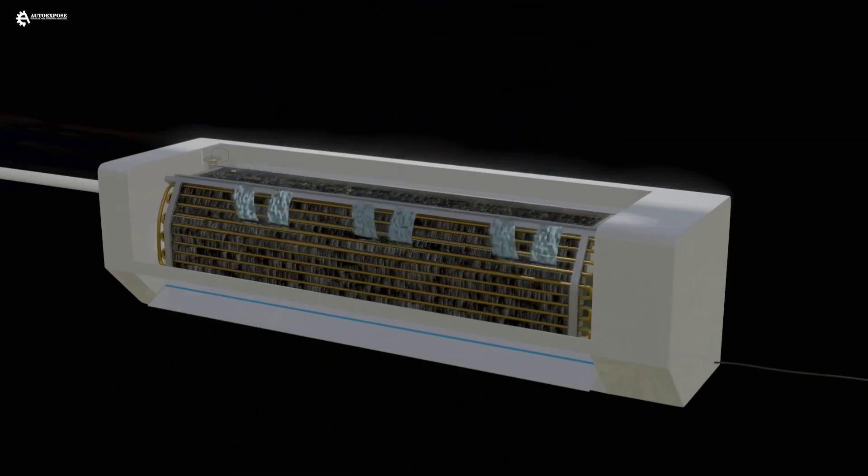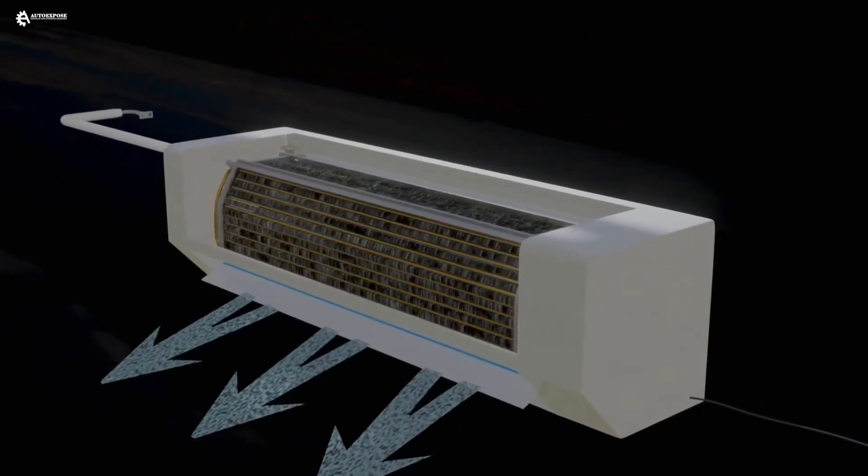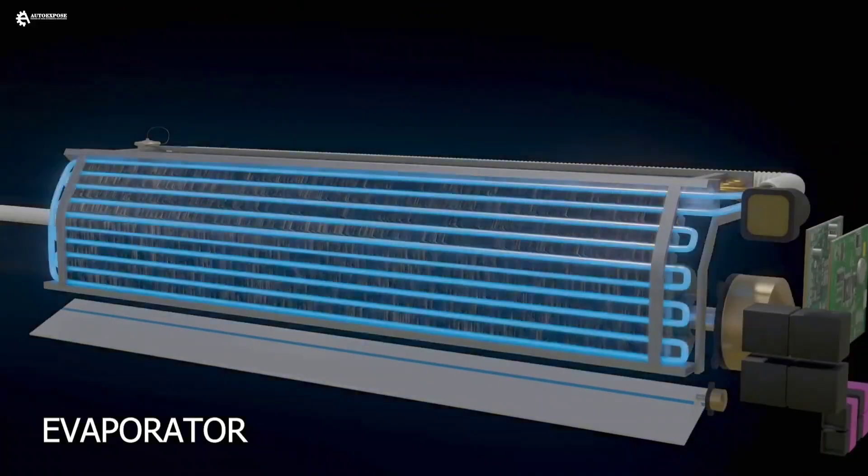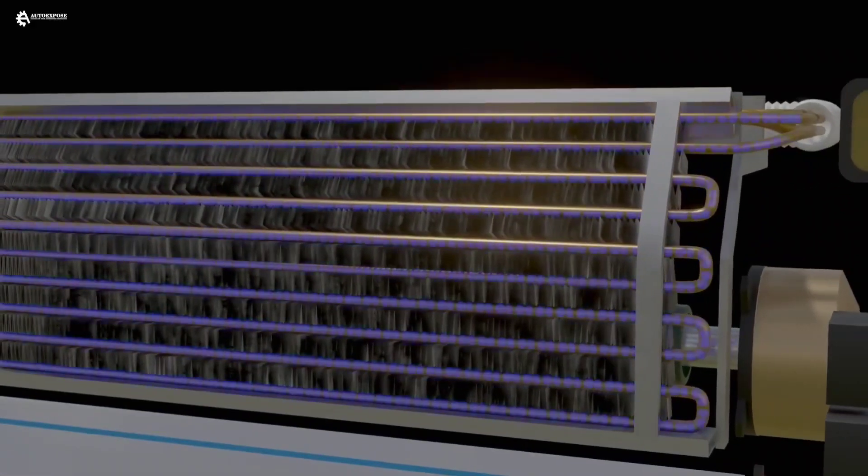If we disassemble the AC unit, the air circulation in it is more or less like this. The AC only circulates the air in the room through a component called the evaporator. The evaporator consists of two parts, namely pipes and heat sinks.